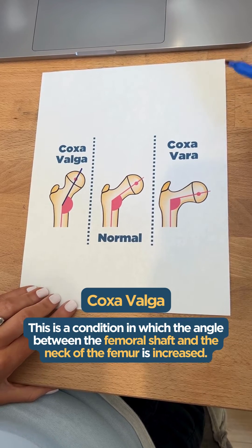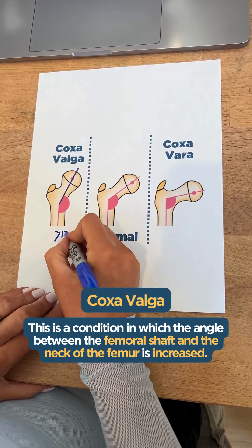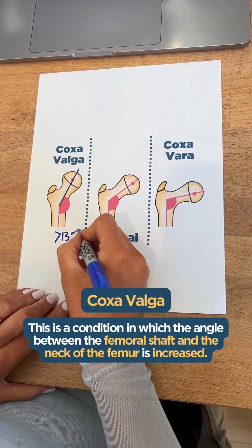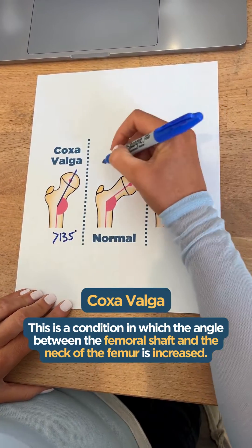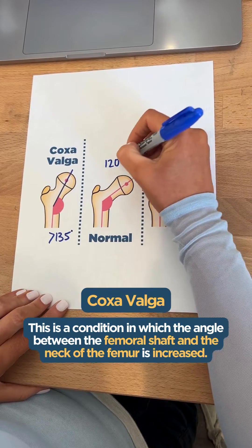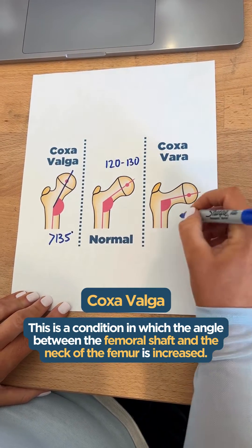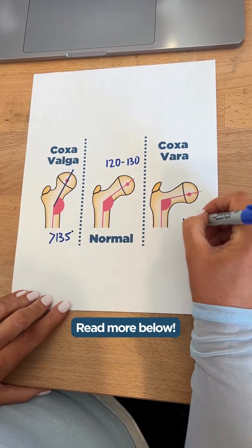We're typically looking at degrees over 135 degrees here, whereas normal is 120 to 130, and coxa valga occurs under 120 degrees.